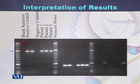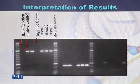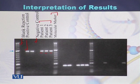This lane is the negative control, and since it is the negative control, there should not be any amplification in this well. The remaining lanes show results for patient 1, patient 2, and patient 3. The final lane is the DNA ladder, also called the molecular marker.